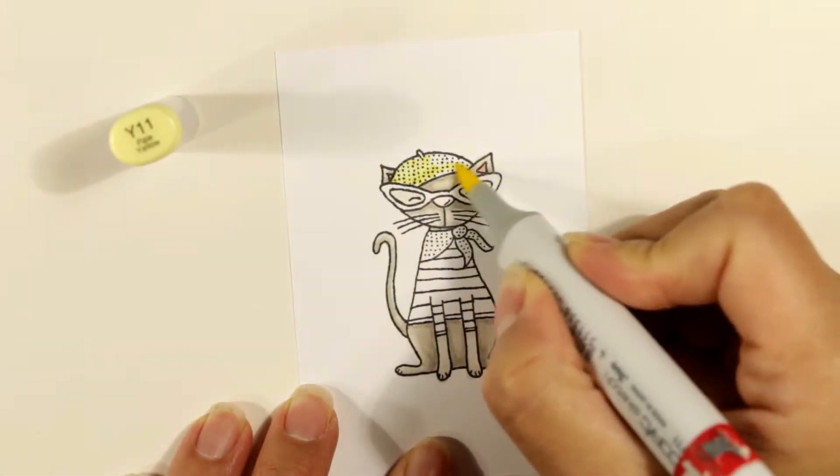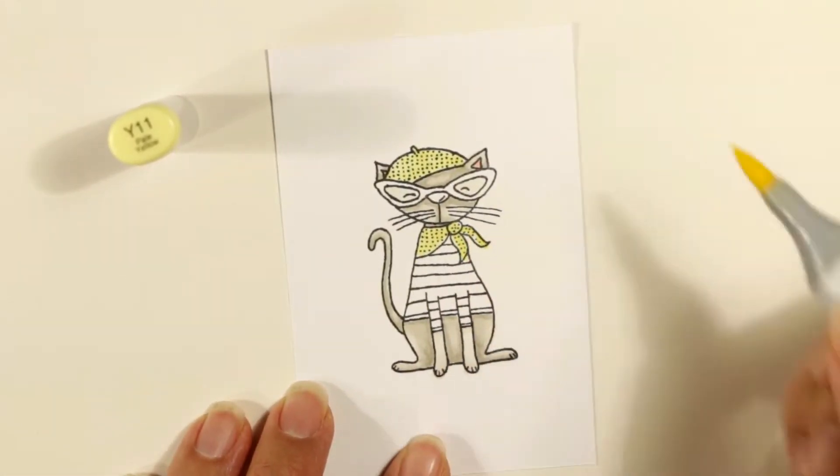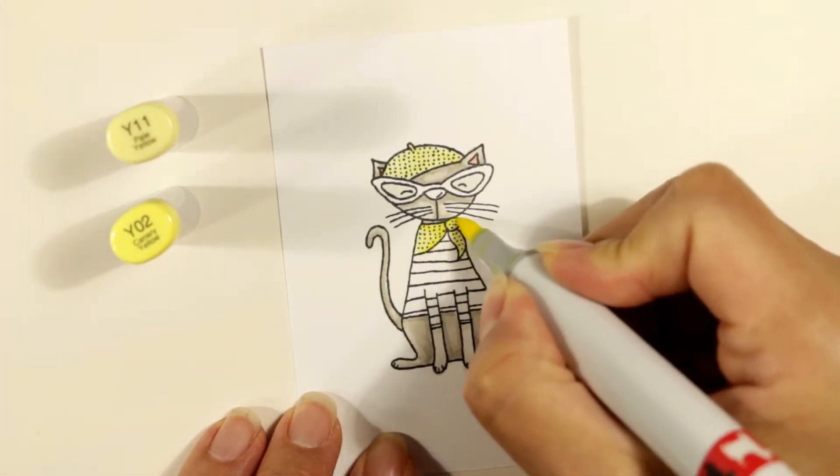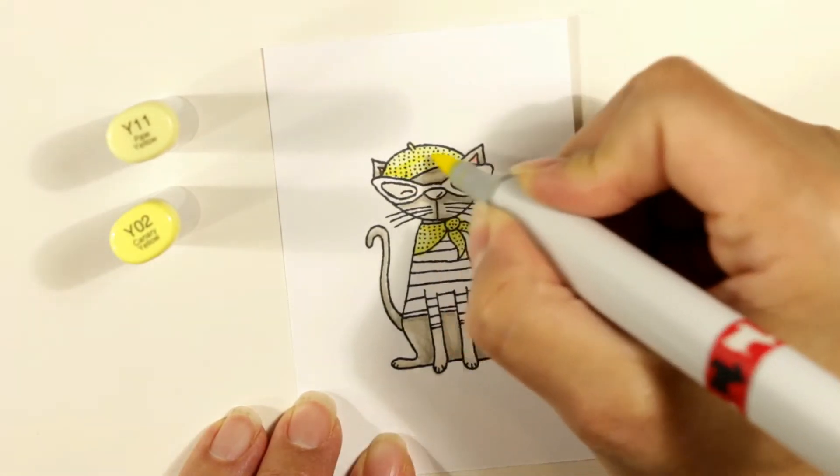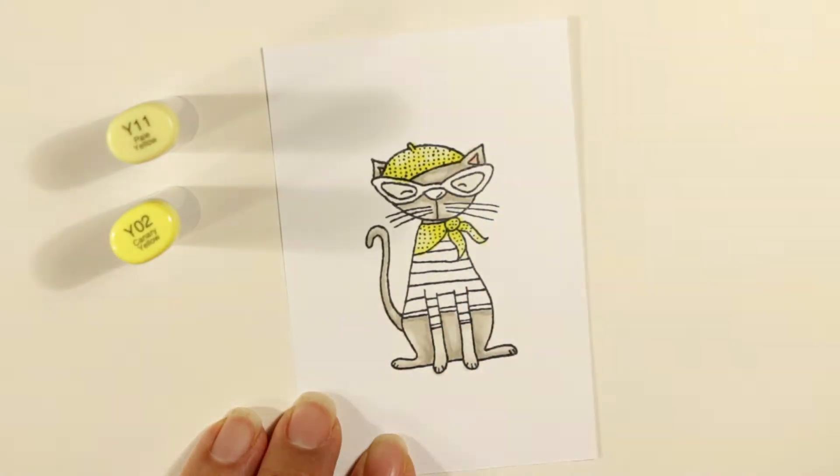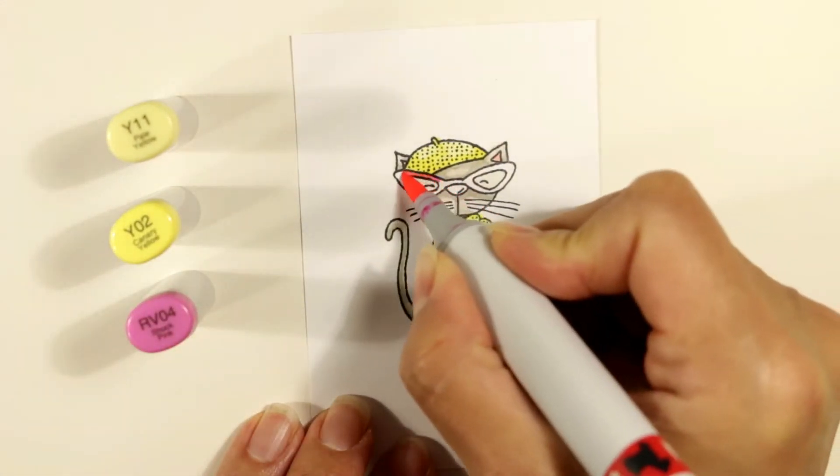I decide the beret and the little neckerchief are going to be colored up in yellow. The Y11 is a little pale, pale yellow. And the Y02 is a canary yellow. So I'm just using the Y02 as a little bit of the shadowed areas.